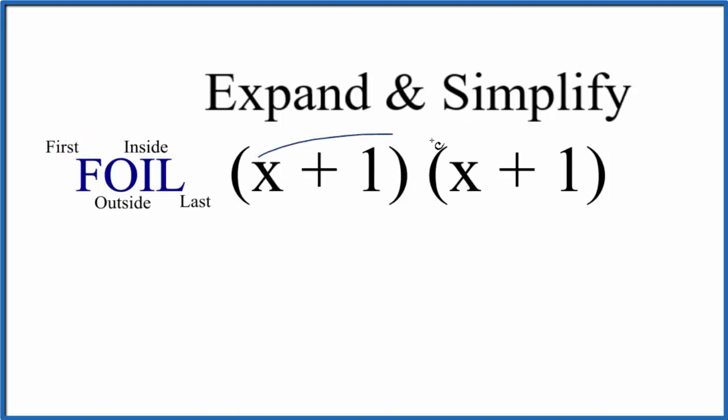We take the first term, that's the x times the first term here, that's x as well, so we have x squared. Then we have the outside term, that's x times this term over on the outside here, so x times 1, that's x.